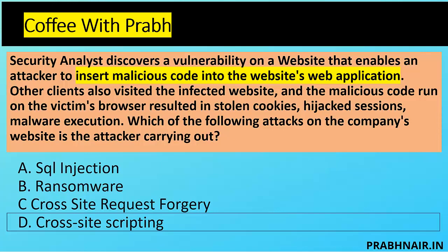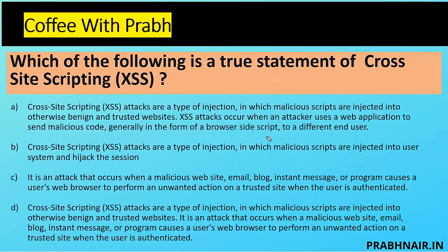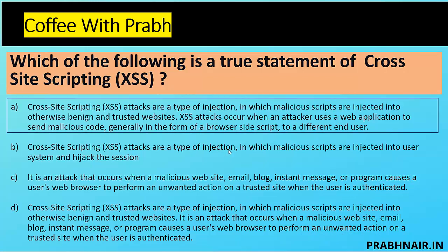Question 5: Which of the following is a true statement about Cross-Site Scripting? Option A: XSS attacks are a type of injection — attack occurs when attacker uses a web application to send malicious code in the form of a browser-side script to a different end user. Option B: Malicious scripts injected into user's system to hijack session — more like session hijacking. Option C/D: An attack causing a user's browser to perform unwanted actions on a trusted site when authenticated — that's more like CSRF. The only correct answer is A.